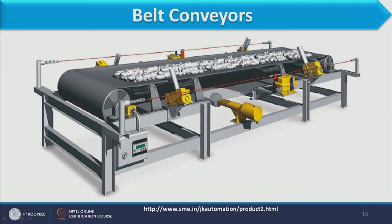The belt wraps around both rollers, and its total length is approximately twice the distance between the feed end and discharge end. During continuous operation, material placed on the belt causes sagging. This problem is addressed by placing support rollers at definite intervals along the length, from feed end to discharge end, which keep the belt straight.